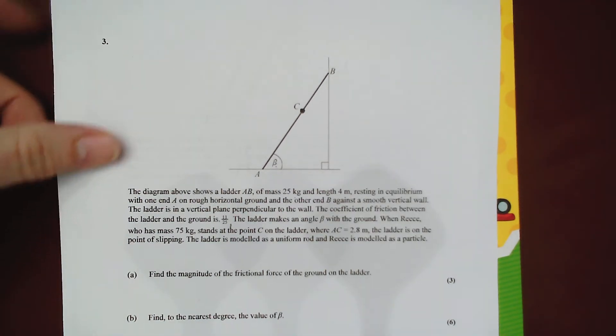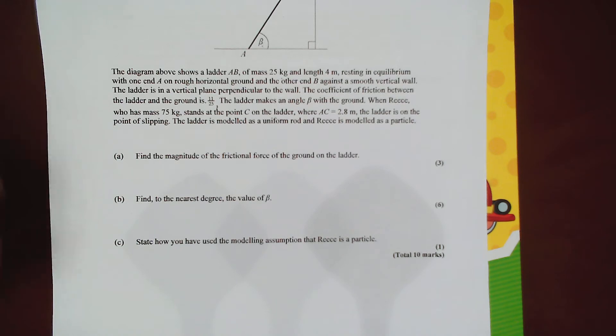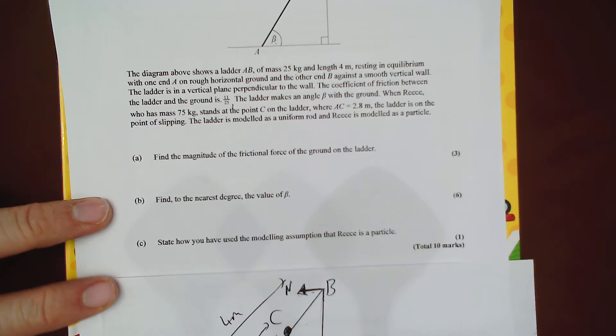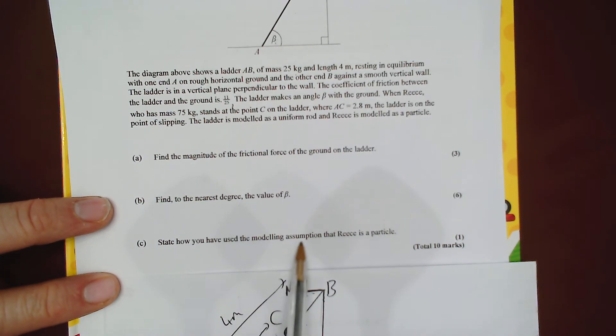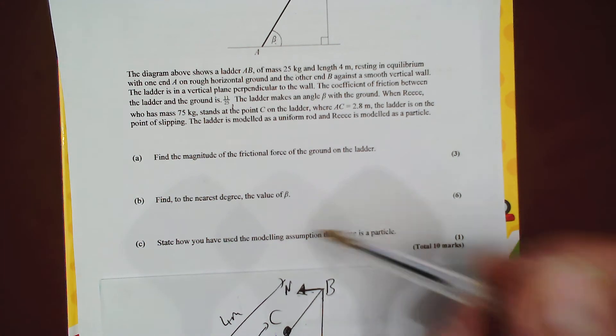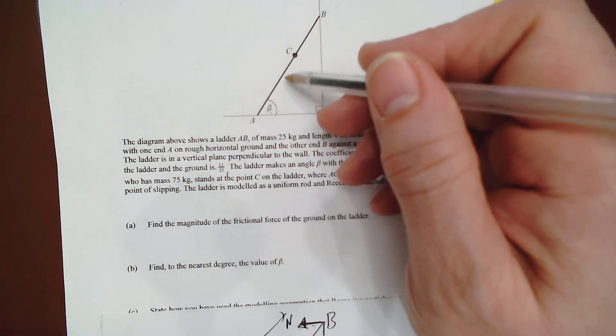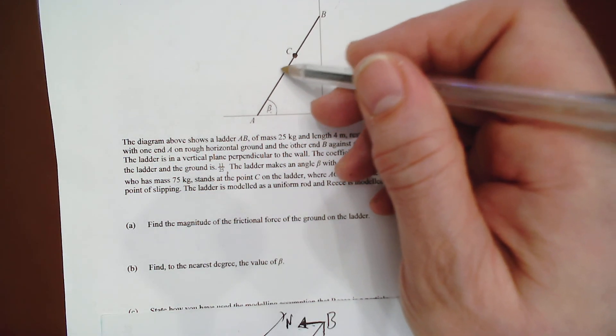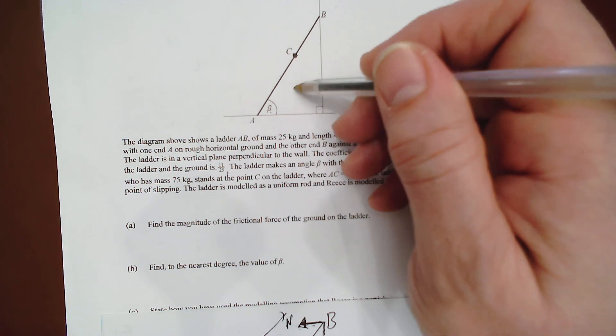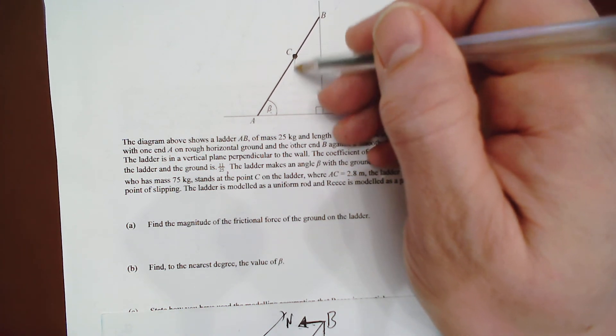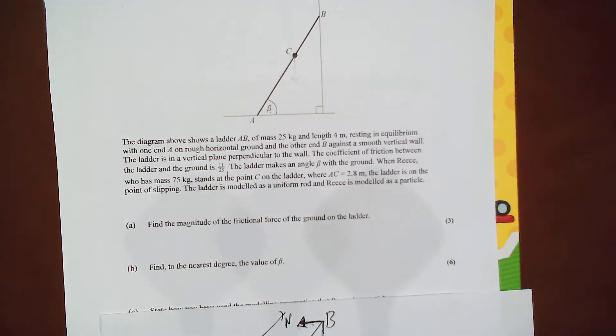There is one last question. And you often get one of these at the end. State how you've used the modeling assumption that Reese is a particle. Well, Reese obviously isn't a particle, he's a person. But we model him as a particle. And that means that his weight just acts at one point. A particle, you can just draw it down like that, his weight.